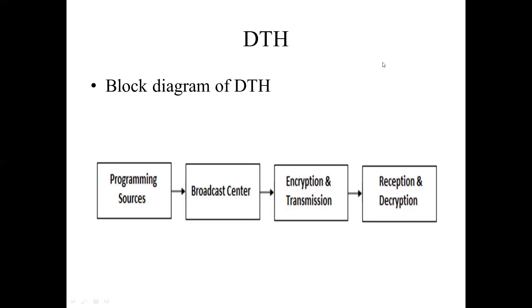From the satellite, one can receive the signal via a personal dish. The block diagram of DTH includes the programming source, uplink center, encryption, transmission, reception, and decryption. The DTH network consists of a broadcasting center, satellite, encoders, multiplexers, modulators, and DTH service receivers.